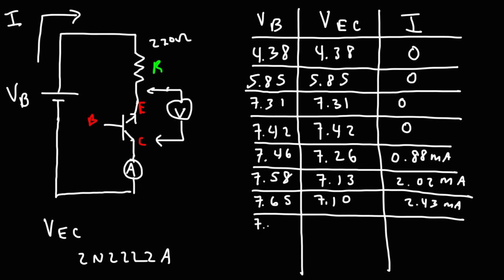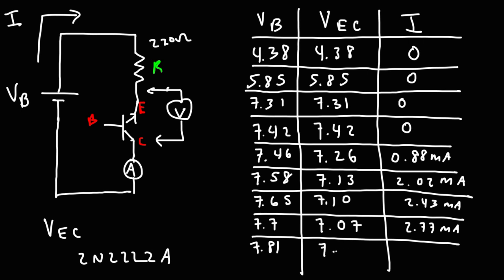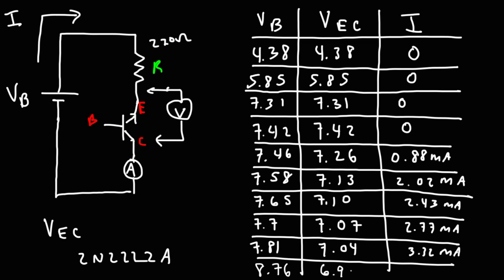When VB was set to 7.7 volts, VEC dropped to 7.07, with current rising to 2.77 milliamps. Then at VB = 7.81, VEC went down to 7.04, and the current was 3.32 milliamps. At VB = 8.76 — using six older AA batteries — the current was 8.46 milliamps and VEC was 6.90.